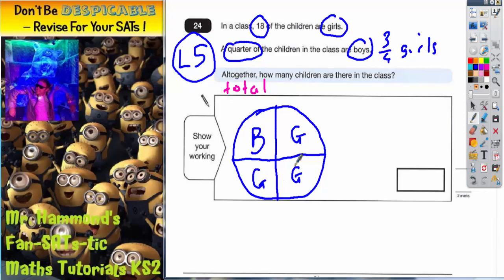So we've got one quarter boys, three quarters girls. Now let's look at what we can do. 18 of the children are girls, so these three quarters must be 18 altogether. Now we've got three sections to split 18 across. If you split 18 across three equal sections, 18 divided by 3 is 6.